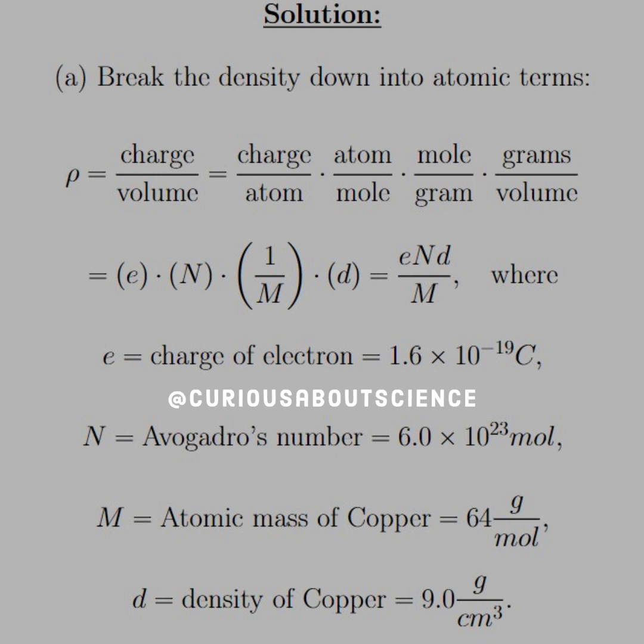M is the atomic mass of copper, which is 64 grams per mole. And D is the density of copper, which is 9.0 grams per centimeter cubed.